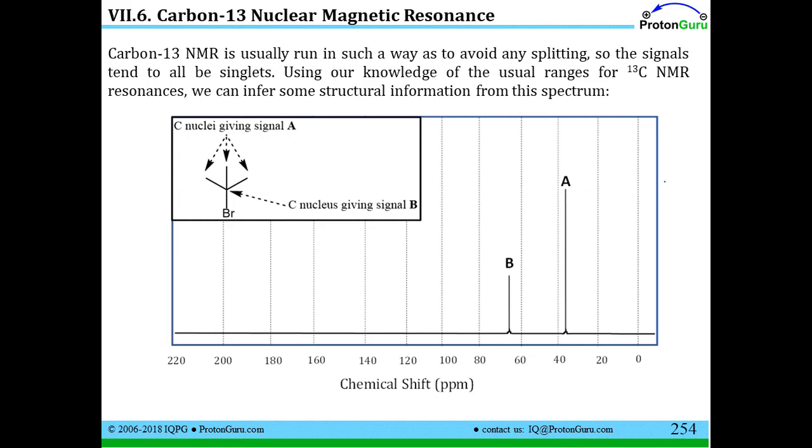Now using our knowledge of the usual ranges for carbon-13 resonances, we can infer some structural information even from a simple spectrum like this. If we see that we have a peak between around 0 and 40, we kind of think that's probably an alkyl set of carbons that are chemically equivalent to each other.